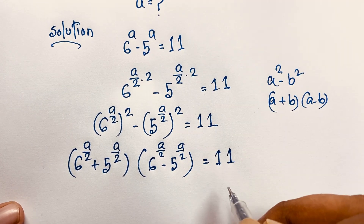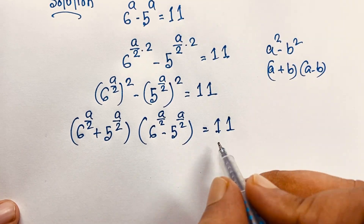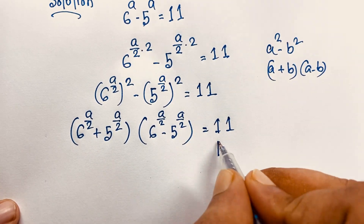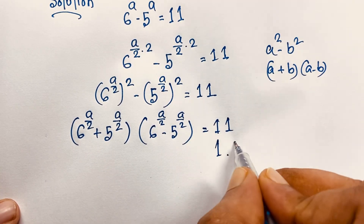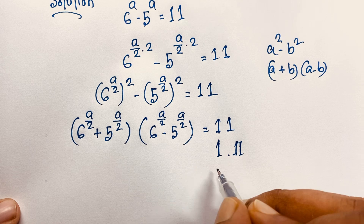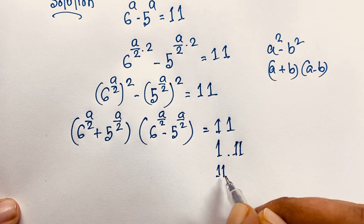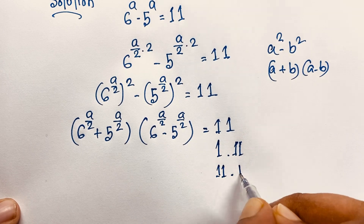Now, 11 is a prime number. So at this point we find that the only factors are 1 times 11 or 11 times 1.